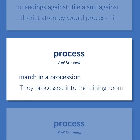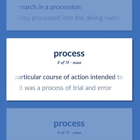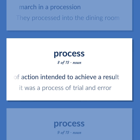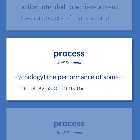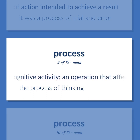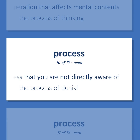March in a procession. They processed into the dining room. A particular course of action intended to achieve a result. It was a process of trial and error. Psychology: The performance of some composite cognitive activity; an operation that affects mental contents. The process of thinking. A mental process that you are not directly aware of. The process of denial.